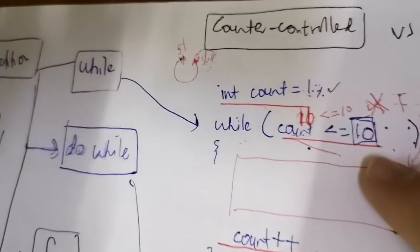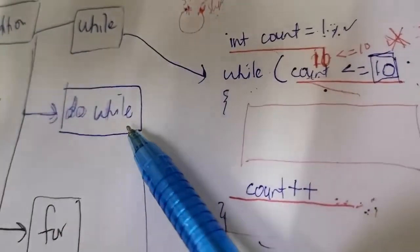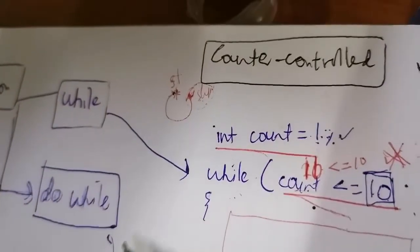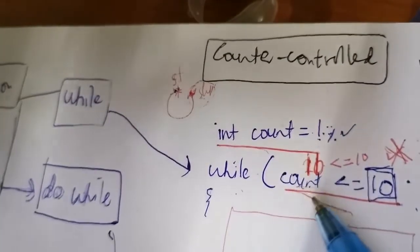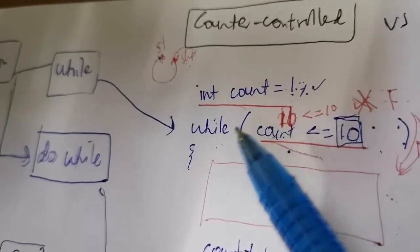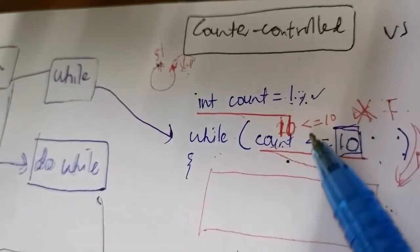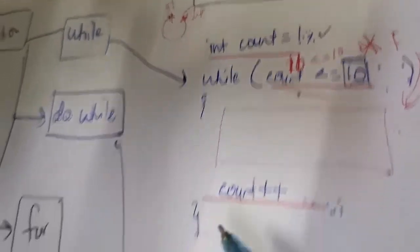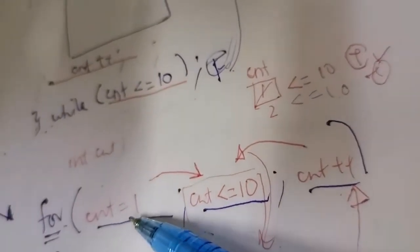For counter control, you can use all three loop structures: the while loop, the do-while loop, and the for loop. All three can be used in a counter control loop structure. For example, you can use a while loop to repeat 10 times, or use the for loop with its three elements in one line.